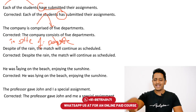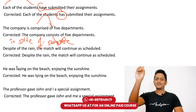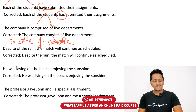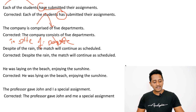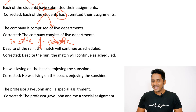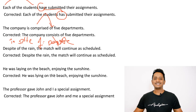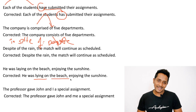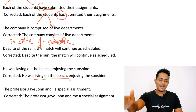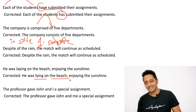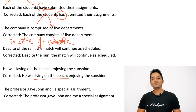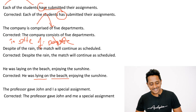'He was laying on the beach' — you lay when you put your hands on someone or lay the foundation. Lay is a verb for doing an activity. But when someone is just resting or sleeping, it's 'he was lying' — L-Y-I-N-G on the beach. It's not laying. Laying means to lay hands on or lay the foundation. It's 'lying on the beach'.